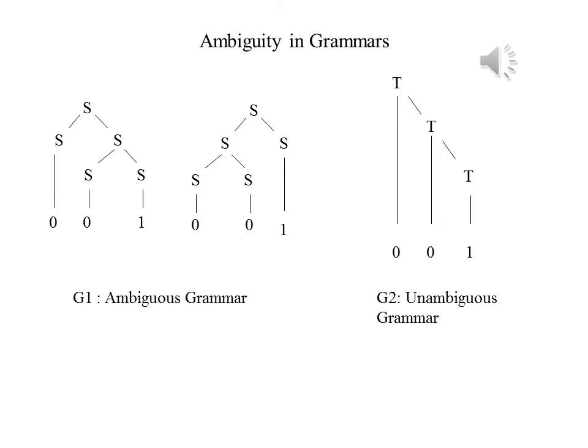As you can see, the first language has two different parse trees for the expression 001. Therefore, the first grammar is ambiguous. Since there is no second parse tree for the second grammar, it is unambiguous. And therefore, so is the language.